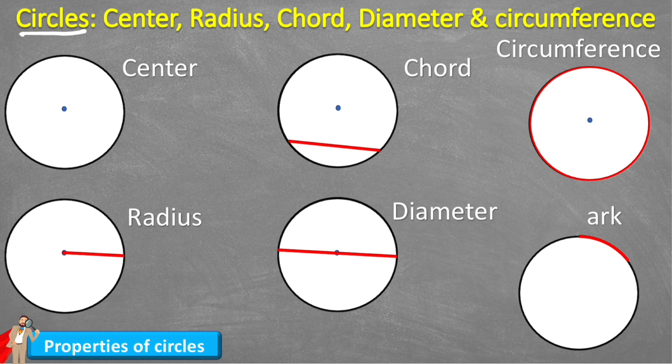So we're looking at naming the center, the radius, chord, diameter, circumference and arc. So let's start with the center, which is pretty self-explanatory. The center is this part right in the middle of the circle.